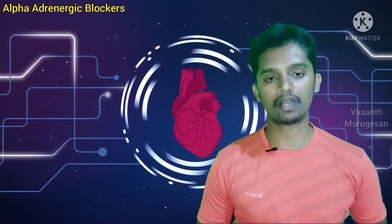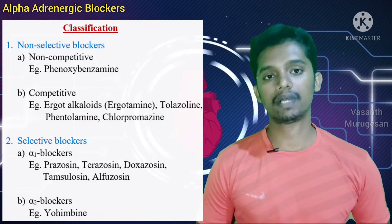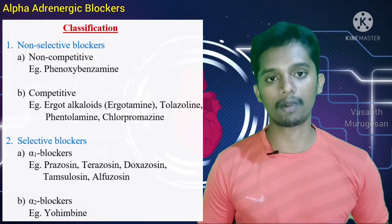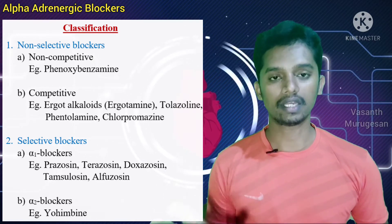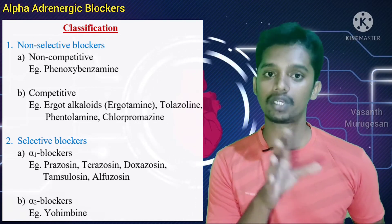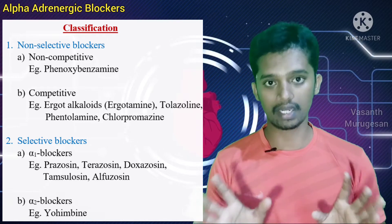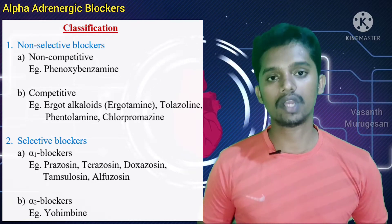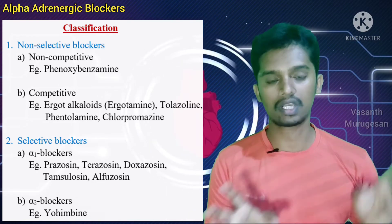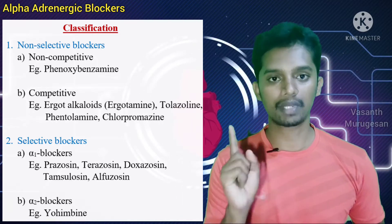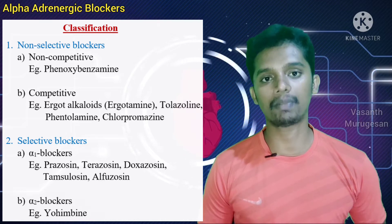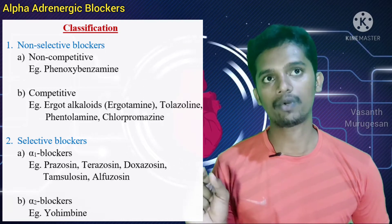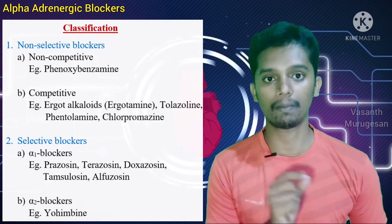Next is the classification of Alpha Adrenergic Antagonists. There are two major categories. The first is Non-selective Alpha Blockers, which block both Alpha 1 and Alpha 2 receptors. Within this category, there are two subtypes: Non-competitive blockers — example drug is Phenoxybenzamine — and Competitive Alpha Adrenergic Blockers — example drugs include Ergotamine, Tolazoline, Chlorpromazine, and Phentolamine.